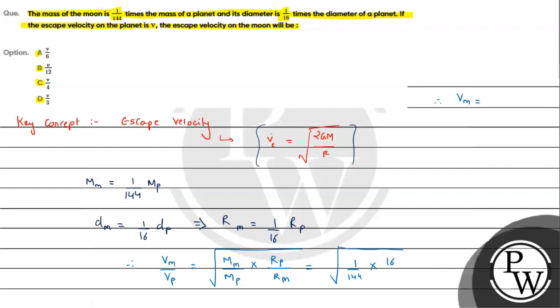Vm will be Vp, which for the planet is given as v, so the answer is v by 3. This is the answer for the question. We are getting a match with option D. So I hope you understood the solution. All the best.